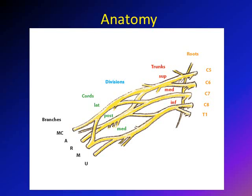Let's discuss the anatomy of the brachial plexus. Knowing the anatomy is very important to understand the pathology. The brachial plexus is formed of roots, trunks, divisions, and cords, which will later give nerve branches. There are five roots that give rise to the brachial plexus: C5, C6, C7, C8, and T1.